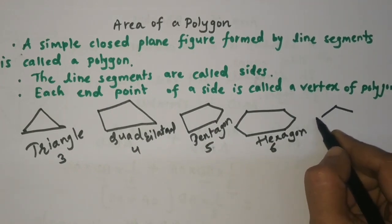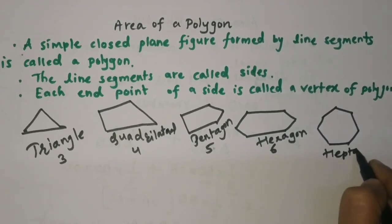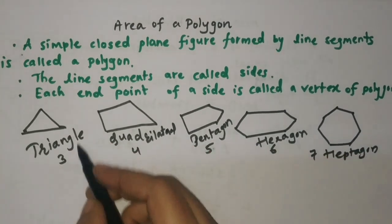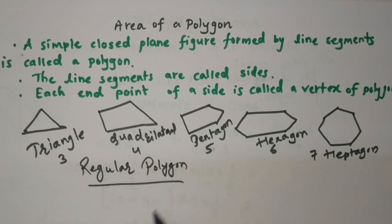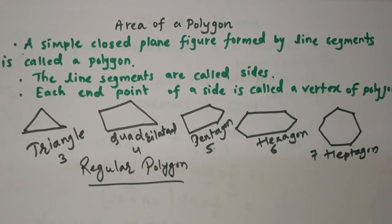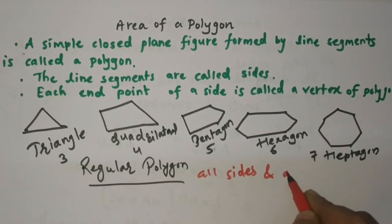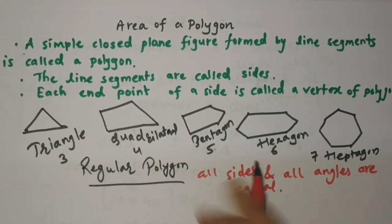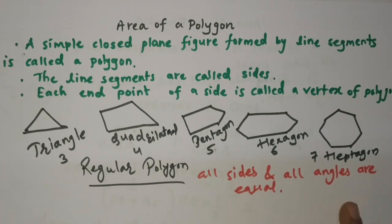Continuing further, a heptagon has seven sides. For a regular polygon — a polygon where all sides and all angles are equal — you can calculate these areas as well. An important property of a regular polygon is that it exactly fits into a circle.